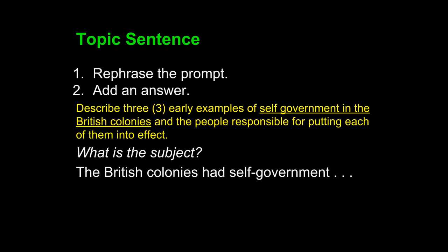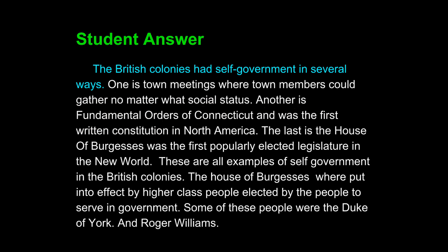Step two is to add an answer. In this prompt, your teacher has already given you that answer — it is three ways. So we write the topic sentence: "The British colonies had self-government in several ways." We know we are looking at three for this particular paragraph. This writer could have written "in three ways," but that indicates there are only three ways. Remember, exemplification does not mean we are talking about every possible example of the concept. So a better topic sentence is "The British colonies had self-government in several ways." The student answer is improving already — we have rid ourselves of the first person voice, and the sentence is clear and direct.